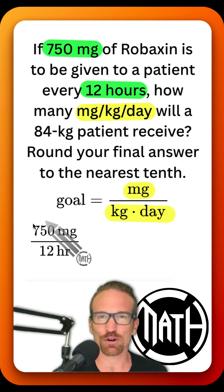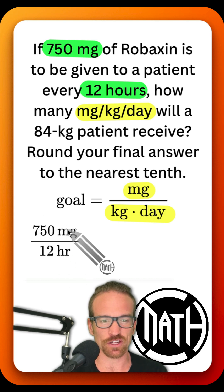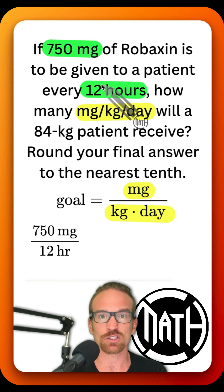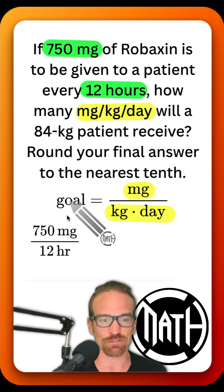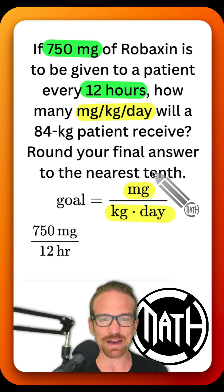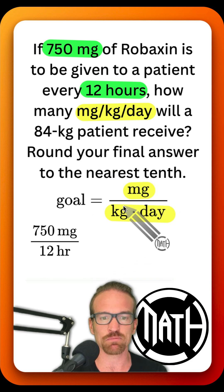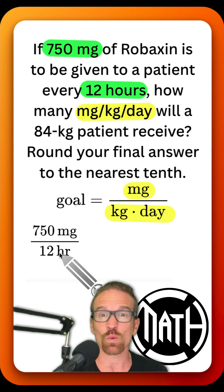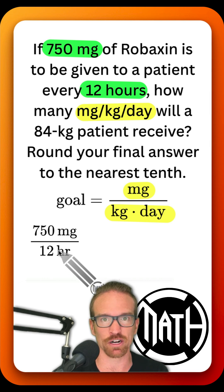What do we know about this 750 milligrams? It's going to be administered to the client every 12 hours. Notice how I wrote this fraction: the 750 goes with the milligram from our problem, and the 750 milligrams is going to be administered every 12 hours. That's our first fraction. Now looking back at our goal, we need milligrams at the top — which we have — but we need kilogram and day at the bottom. Right now we have hours.